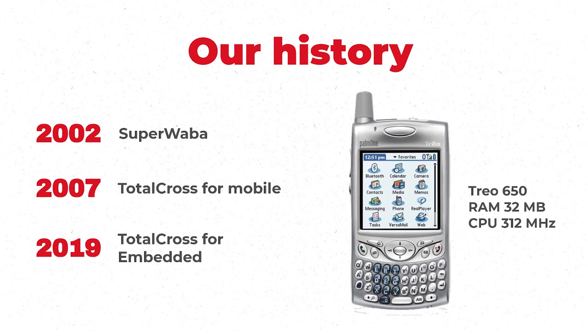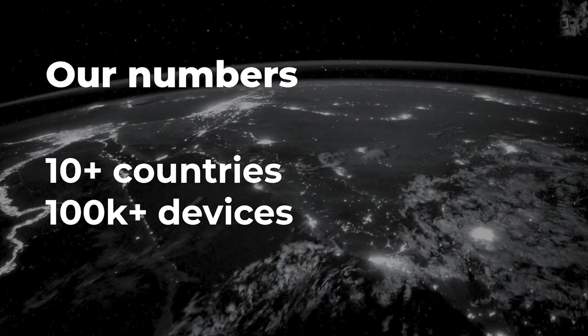A little bit about our history: we started in 2002 with a different technology called SuperWaba, created to run on Palm and Windows CE. In 2007 we started to build the TotalCross Virtual Machine to run on a Palm Treo with only 32 megabytes of RAM and a CPU of 312 MHz — that's why we can guarantee real performance on the device. The VM was designed to run on really low-footprint devices. In 2019 we released our SDK for embedded devices. We have developers and clients in more than 10 countries, with more than 100,000 devices running TotalCross applications.